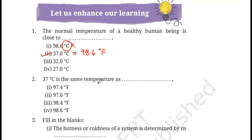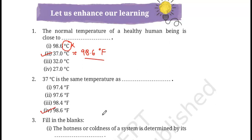37 degree Celsius is the same temperature as — options are 97.4 degree Fahrenheit, 97.6 degree Fahrenheit, 98.4 degree Fahrenheit, or 98.6 degree Fahrenheit. As we just discussed, the answer will be 98.6 degree Fahrenheit.